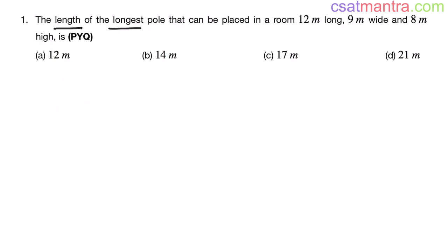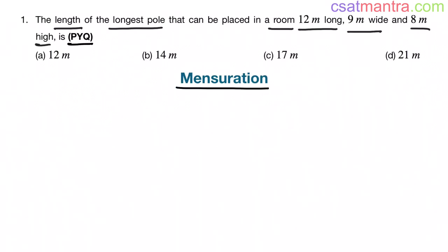The length of the longest pole that can be placed in a room 12 meters long, 9 meters wide and 8 meters high. This is a previous year question from the mensuration chapter.